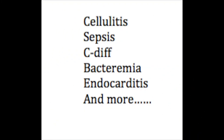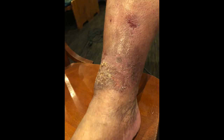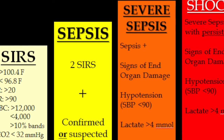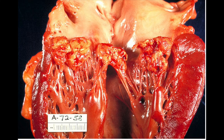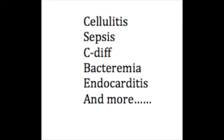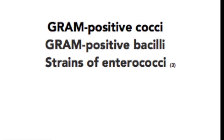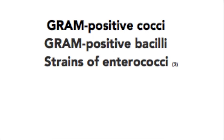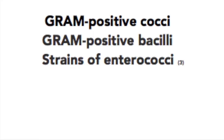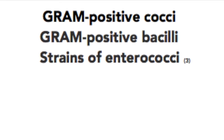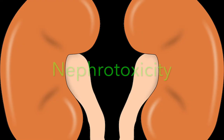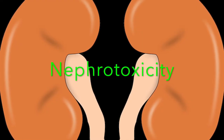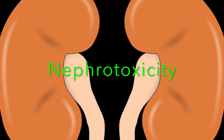Vancomycin is an antibiotic commonly seen in the hospital. It's used to treat a number of different infections — from cellulitis to sepsis, C. diff, bacteremia, endocarditis, and many more. It covers gram-positive cocci, gram-positive bacilli, and strains of Enterococci.